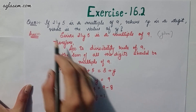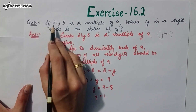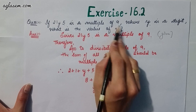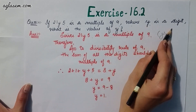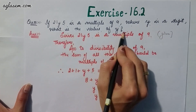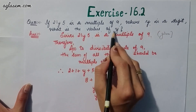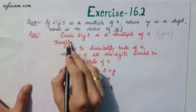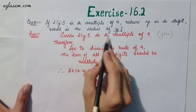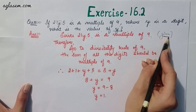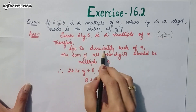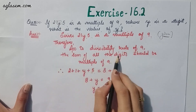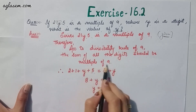Starting with the first question, which says: if 21y5 is a multiple of 9, where y is a digit, what is the value of y? So basically we have to find y. Since 21y5 is a multiple of 9, according to the divisibility rule of 9, the sum of all the digits should be a multiple of 9.